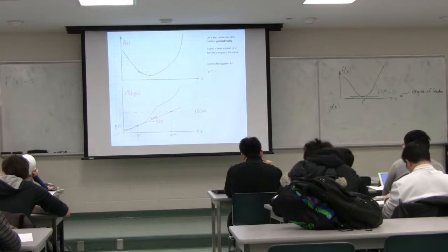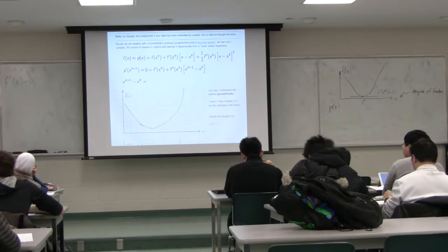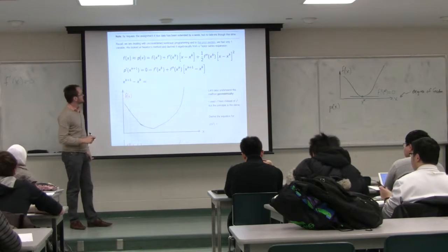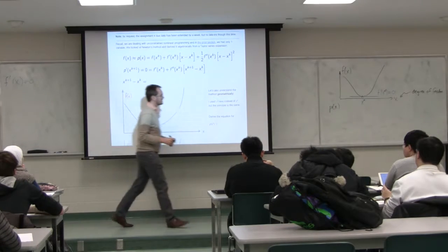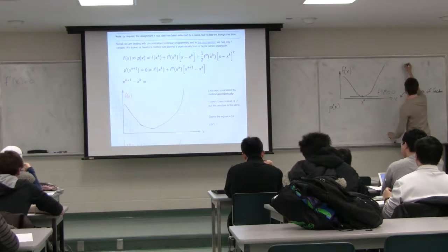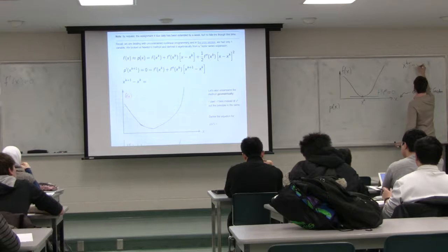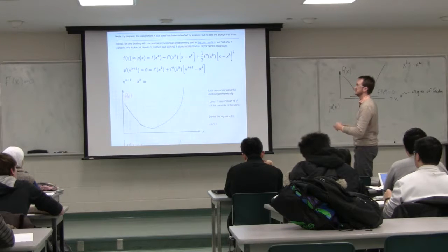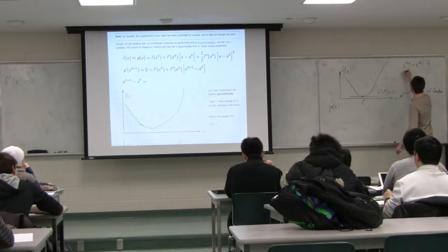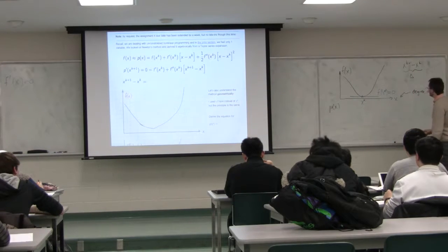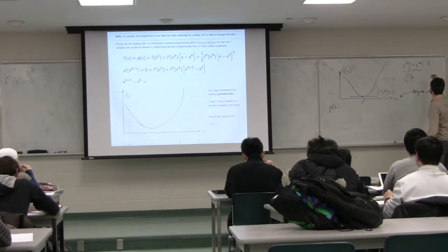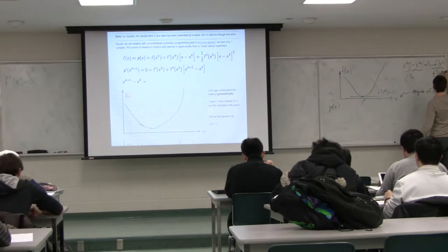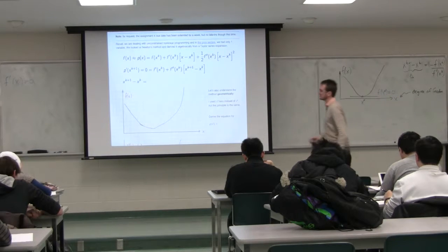We derived Newton's method as a way to do that. We set this polynomial approximation's first derivative to zero. What we derived is that x_{k+1} minus x_k — the step you're going to take from one iteration to the next, call it delta — equals the negative of the first derivative of f over the second derivative. That's the formula from last week.